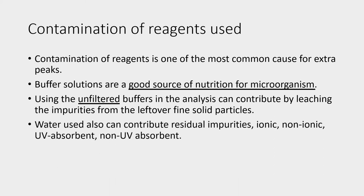Water used can also contribute residual impurities — ionic, non-ionic, UV absorbent, and non-UV absorbent. Water used for HPLC analysis is one of the most important aspects. Impure water contributes various types of impurities. It is recommended to use HPLC grade water, which is available in the market. Alternatively, you can distill demineralized water with a pinch of potassium permanganate to get pure HPLC grade water. This is a slow process but much more economical.